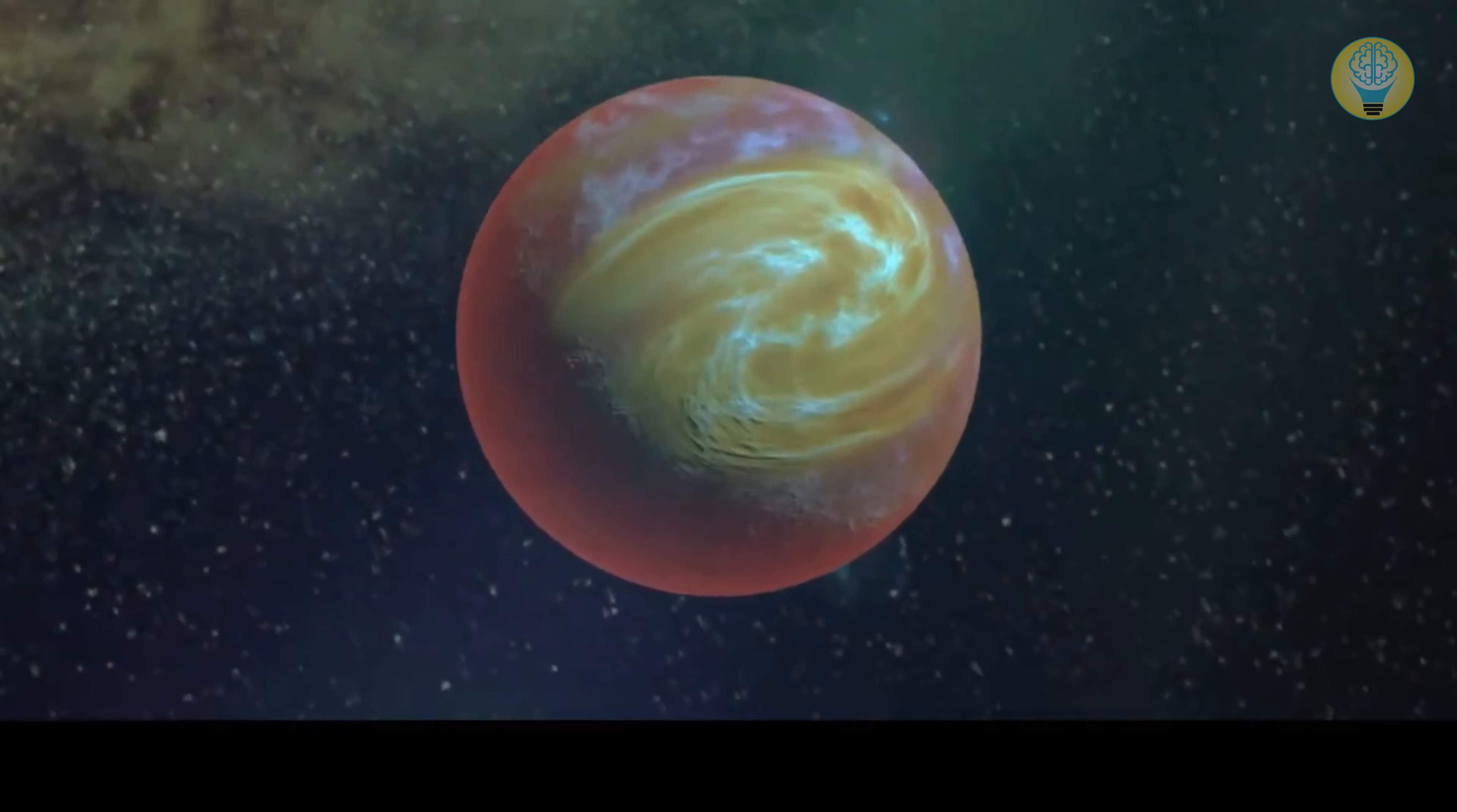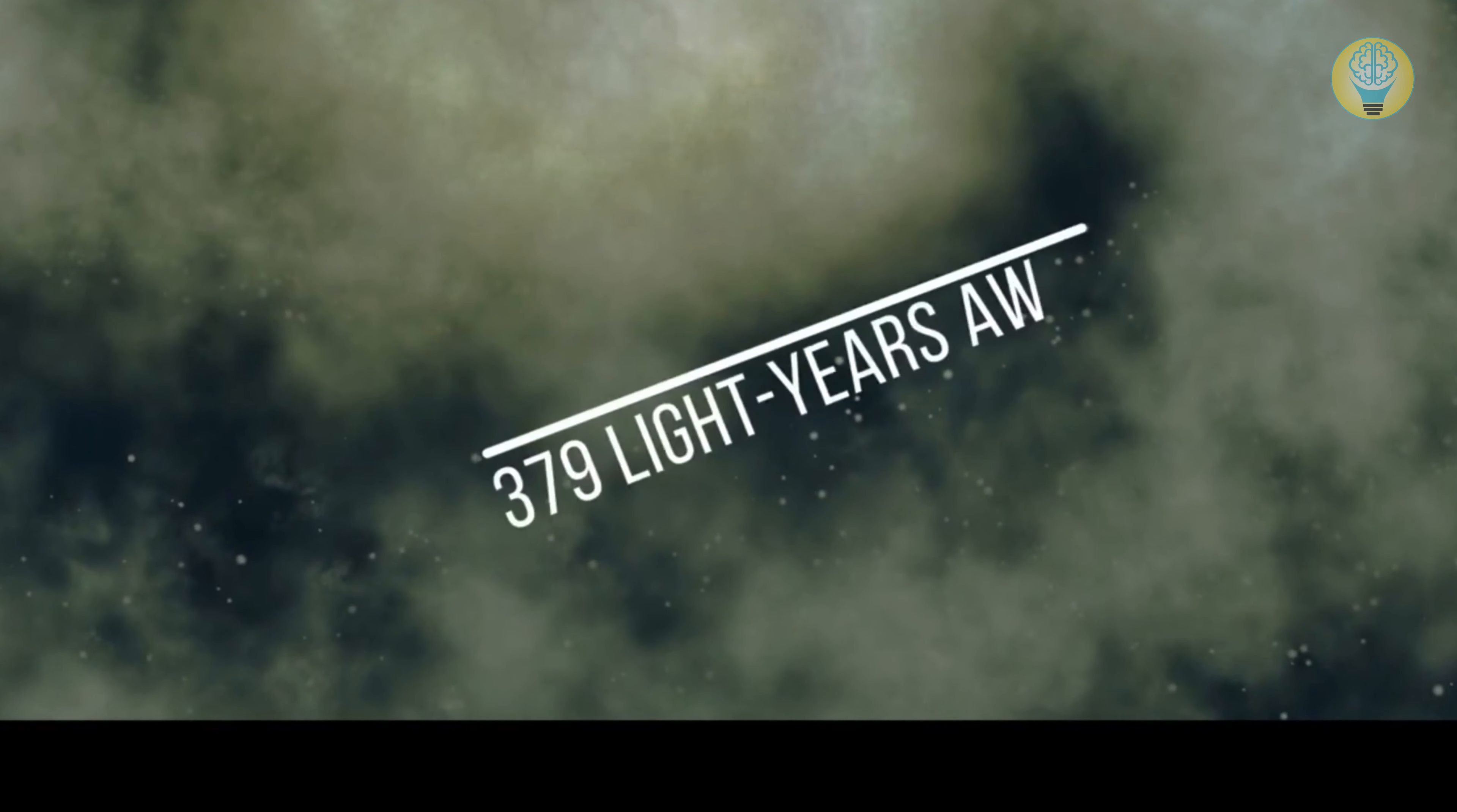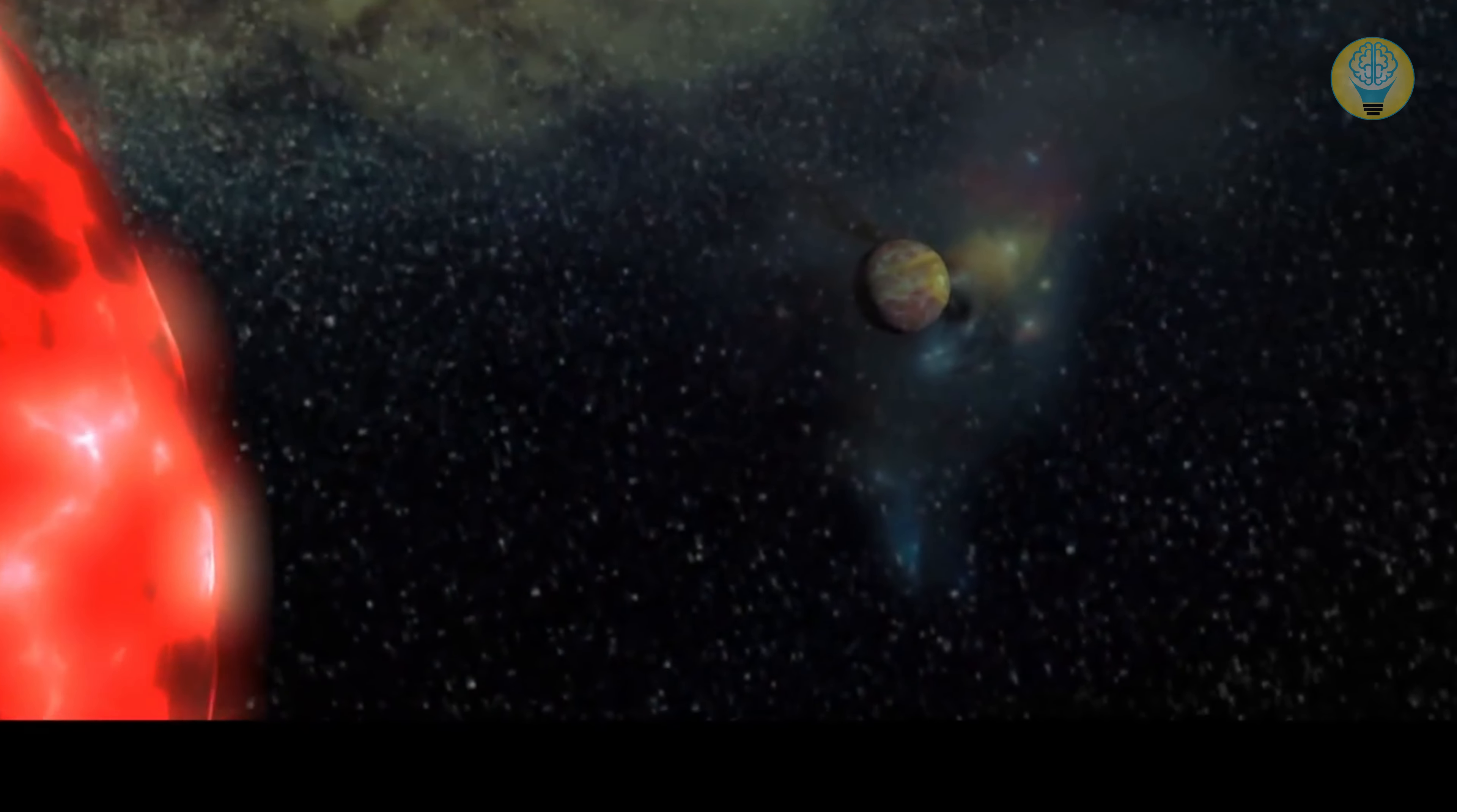Number 2. Jupiter-Sized World. Imagine a planet so massive and mysterious. It's like a hidden Jupiter in our galaxy. Well, we just discovered one of those, orbiting a star just 379 light-years away. Just. We've named it the TOI-2180b, and it's got everyone talking.